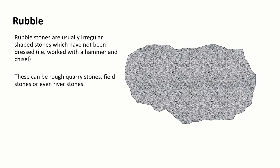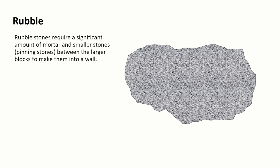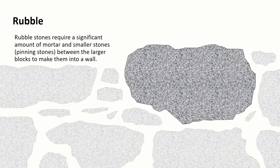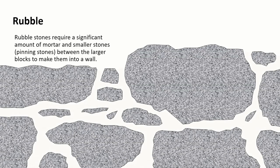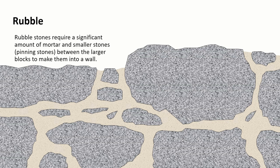If we take the first one which is rubble, rubble stones are usually irregular stone shapes which have not been dressed at all. By dressed I mean worked with a hammer and chisel. These can be very rough quarry stones, field stones or river stones depending on where you are in the world. They require a significant amount of mortar to put them together. We're using very rough stones so there's a lot of space between those rough stones that needs to be taken up. We would use smaller stones between them which are called pinning stones. They're in there to pin the larger stones together.